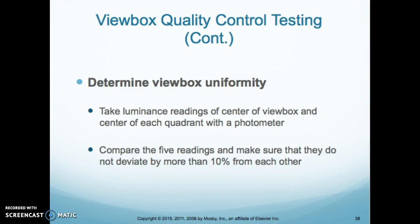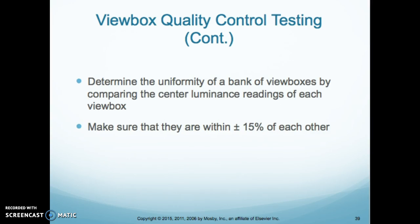When we're looking for uniformity within the view box, we take the luminance reading at the center of the view box and center of each quadrant with the photometer. We compare the five readings and make sure that they do not deviate by more than 10% from each other. To determine the uniformity of a bank of view boxes, we compare the center luminance reading of each view box and make sure they're within 15% of each other.